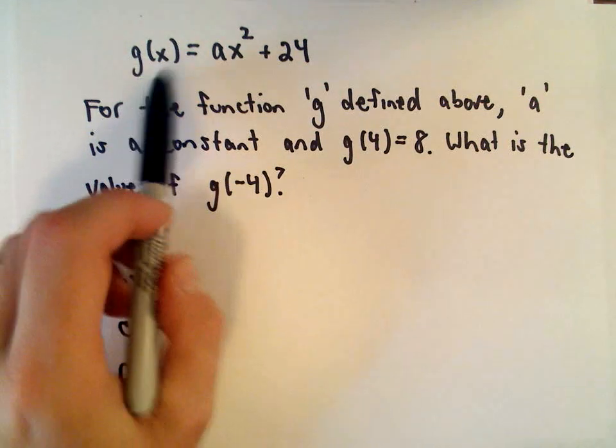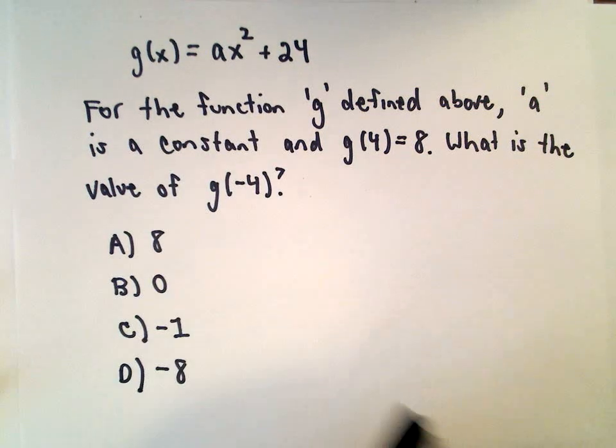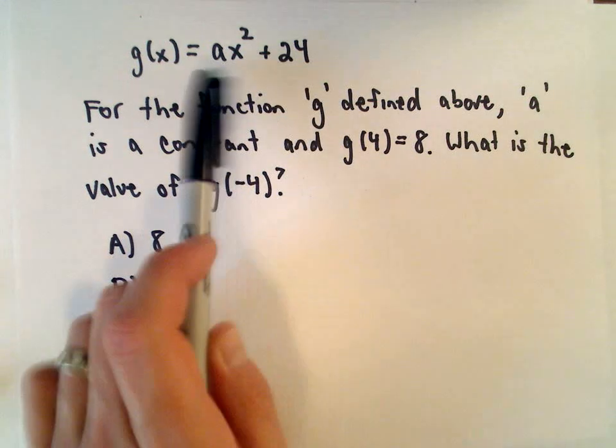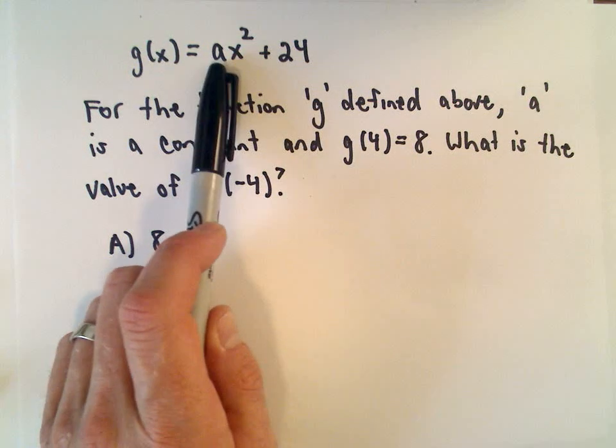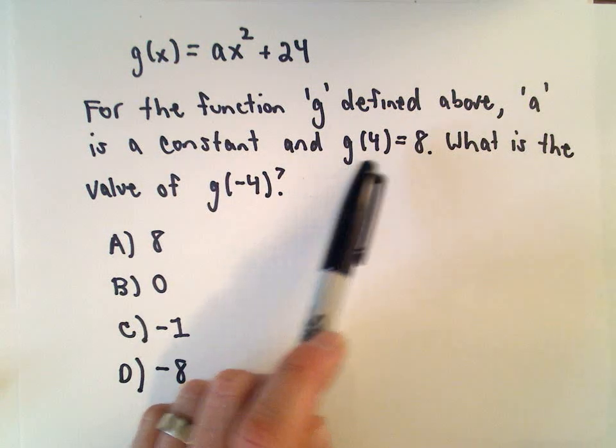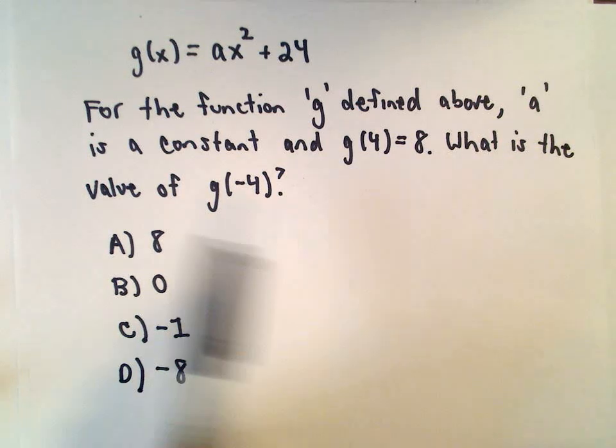So here we're given that g(x) equals a times x squared plus 24. For the function g defined above, the letter a is a constant and we're given that g(4) equals 8. We want to know what's the value of g(-4)?